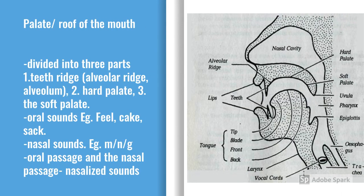The roof of the mouth is divided into three parts: the teeth ridge, hard palate, and soft palate. The hard convex part immediately behind the upper front teeth is called the teeth ridge. Behind the teeth ridge is the hard palate. The fleshy and soft part is called the soft palate or velum. The extreme end of the soft palate is a fleshy finger-like structure called the uvula.